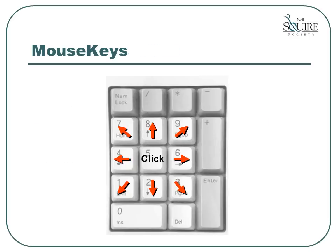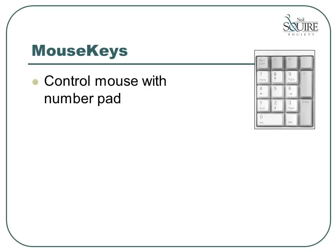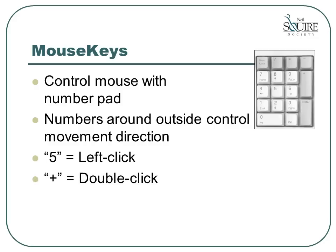Another software option built into the Windows operating system is called Mouse Keys. When the Mouse Keys option is turned on, you can control the mouse movement with the keys of the number pad located on the right side of your keyboard. The numbers around the outside of the pad control mouse movement direction, while the number 5 in the center provides a left click. The plus key on the number pad provides a double click. This option provides very controlled movement of the mouse and is suitable for someone who has difficulty using the mouse but can type on the keyboard.